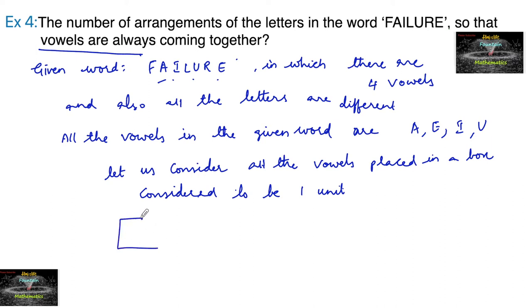So let us mark here. These are A, E, I and U in one box, one unit. And the remaining three letters are F, L and R.